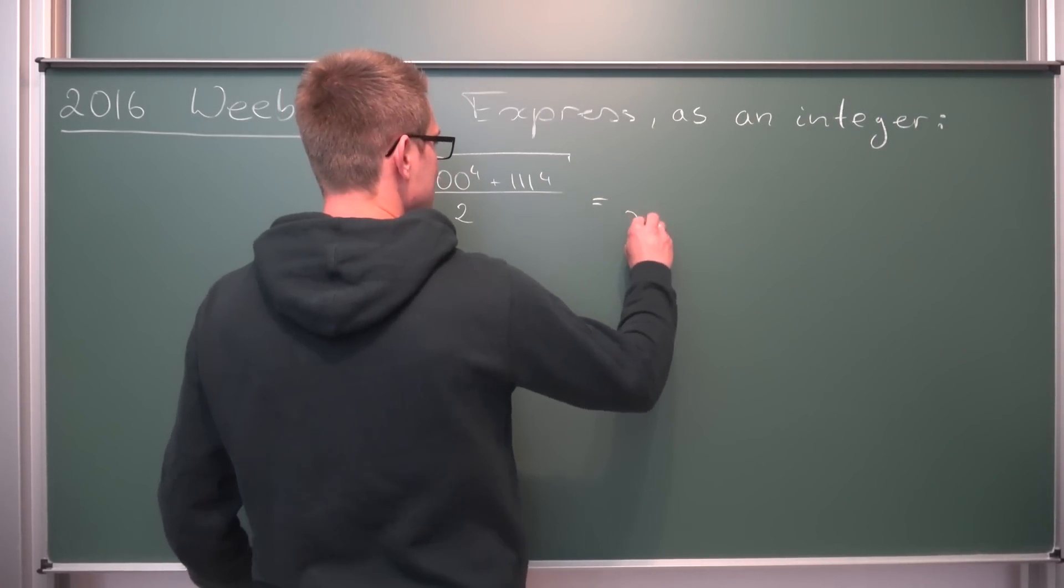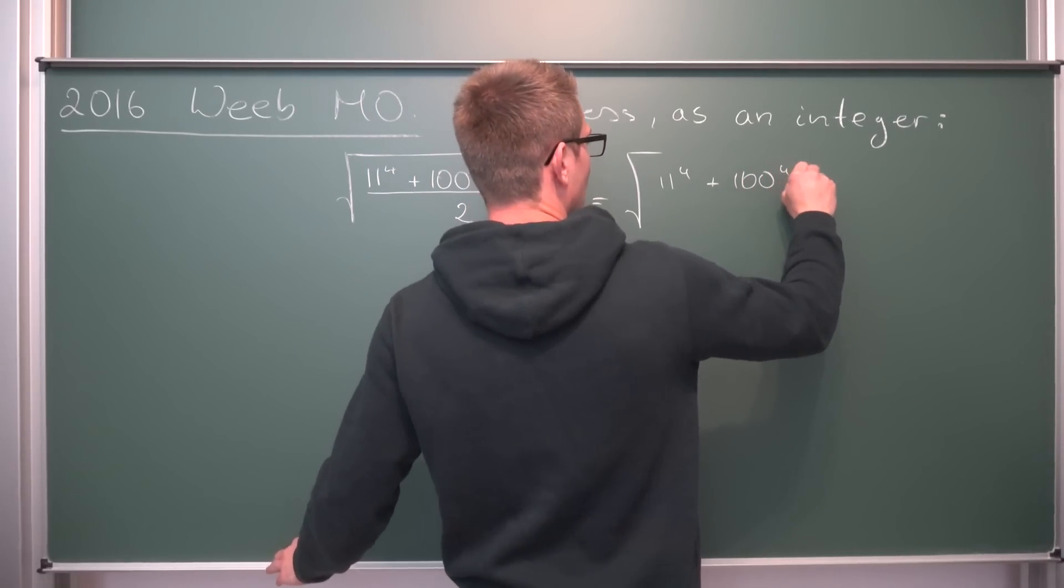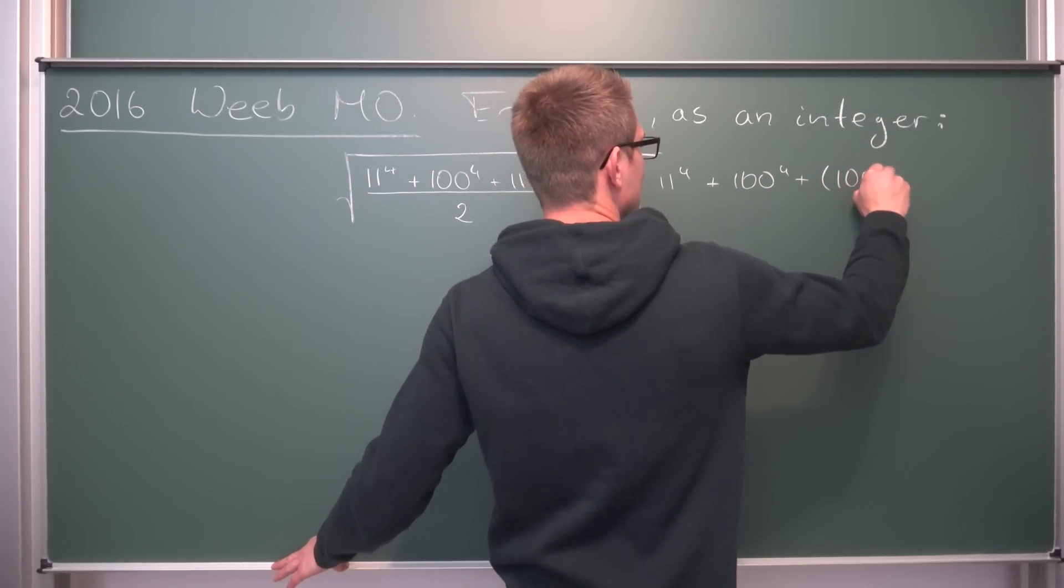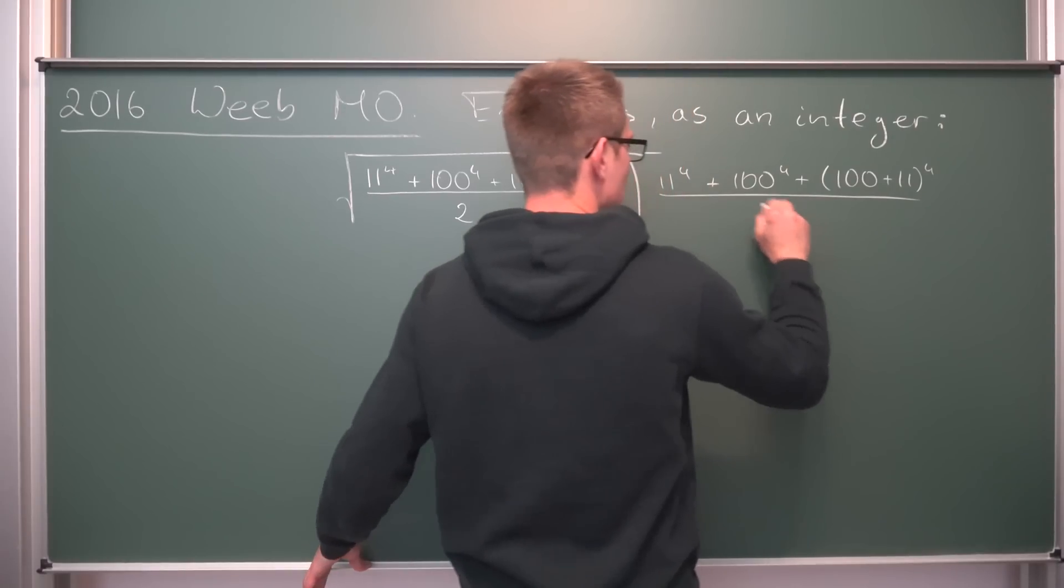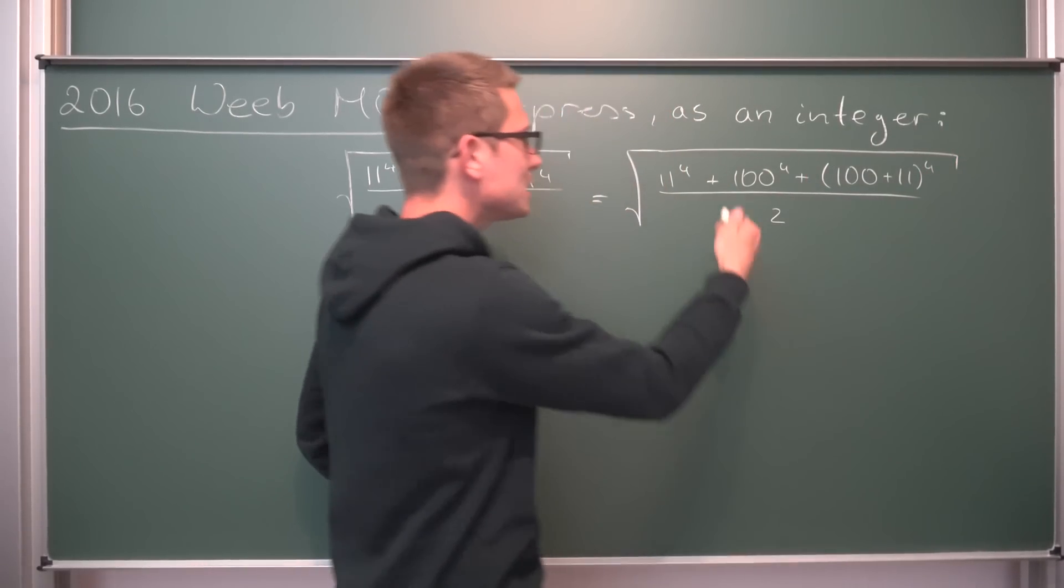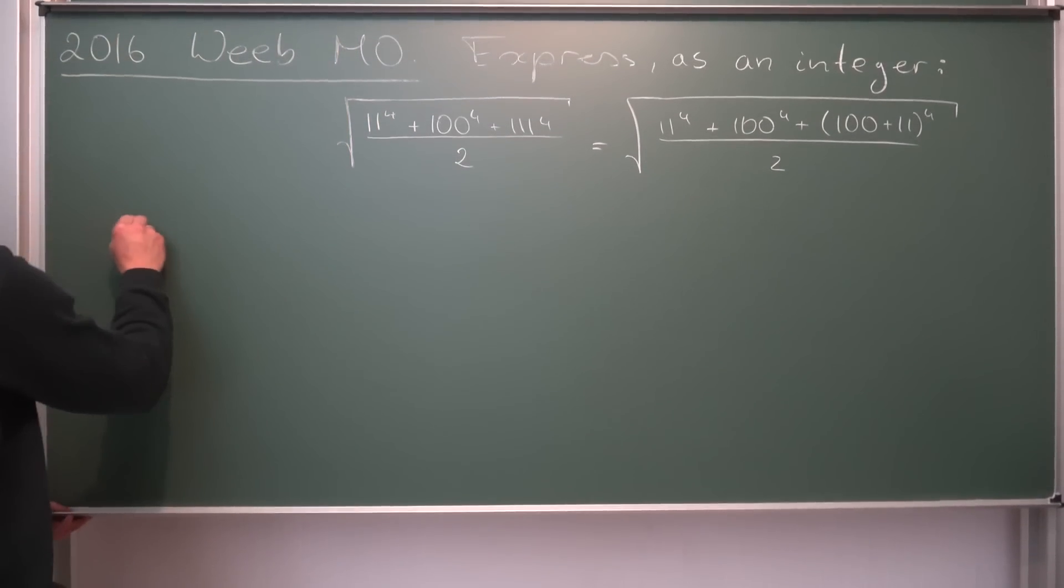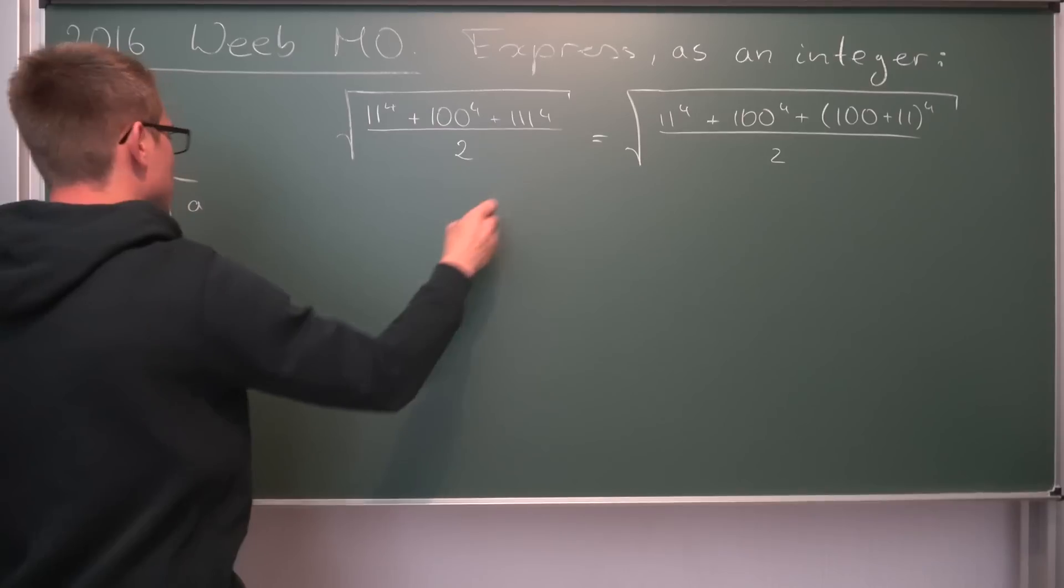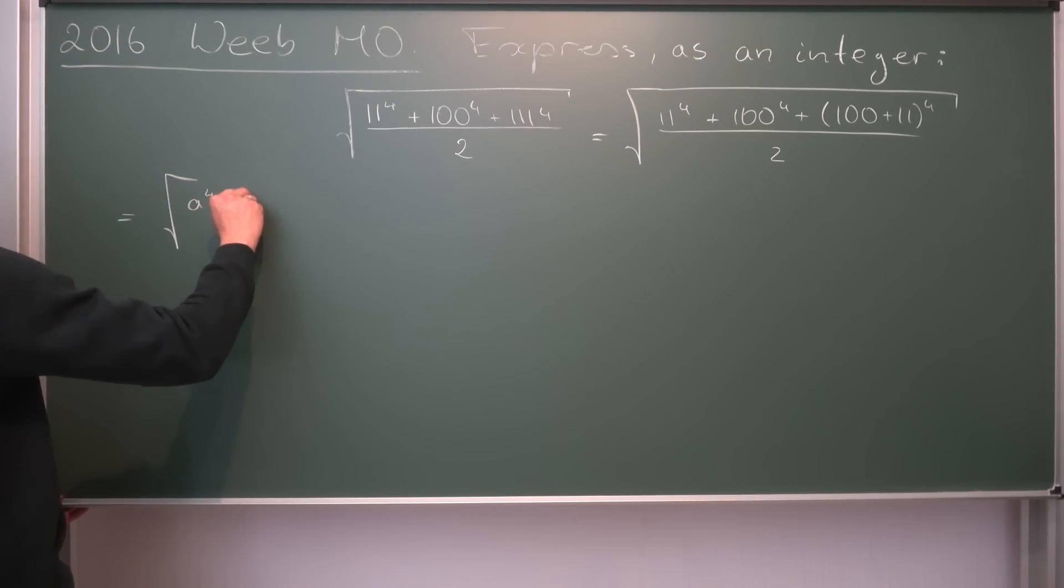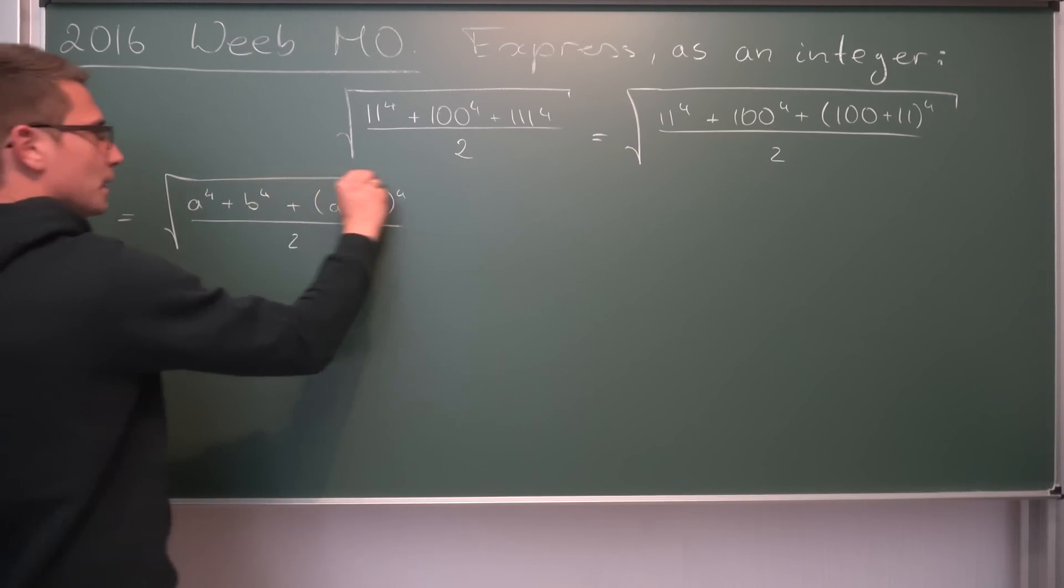111 by coincidence is the same as 100 plus 11. So we can actually rewrite this into the square root of 11 to the 4th power plus 100 to the 4th power plus 100 plus 11 to the 4th power. All of this divided by 2. And now this right here turns into an algebraic problem that we can basically generalize. Namely, it turns into some kind of square root of, let's call the first number 11 a. So a to the 4th power plus and the other one b to the 4th power plus. And then we are going to get a plus b to the 4th power. And all of this divided by 2.